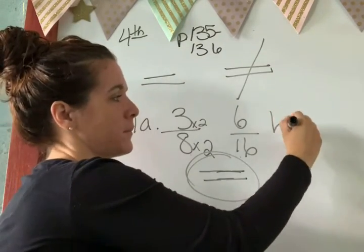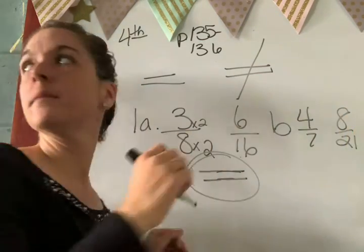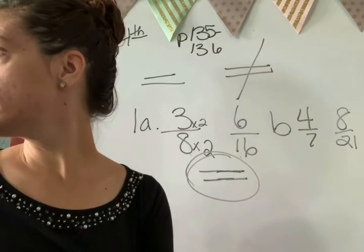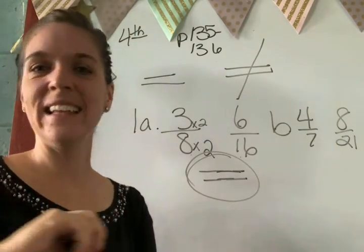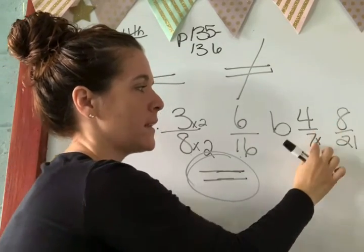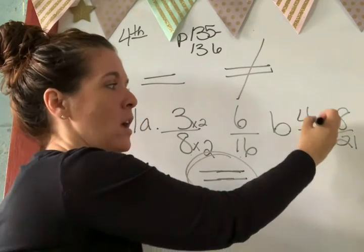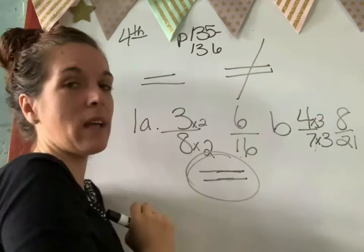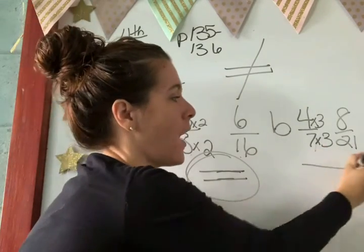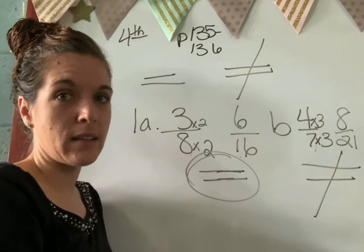Okay, but look at letter B. 4 7ths and 8 over 21. 7 times what equals 21, Selma? 3. Okay, 4 times 3. Does that equal 8, Selma? No. So these fractions are not equivalent. So you put that sign.